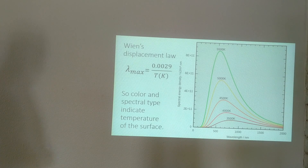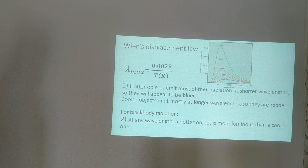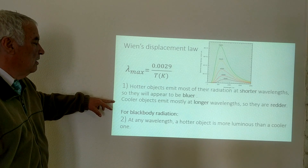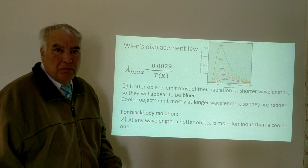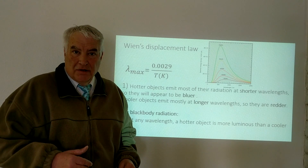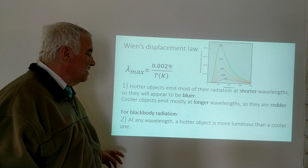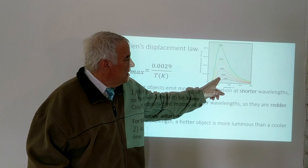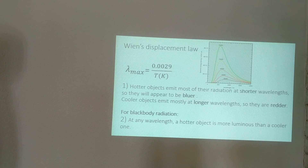Color and spectral type indicate the surface temperature. Hotter objects emit most of their radiation at shorter wavelengths, so they appear bluer. Cooler objects emit mostly at longer wavelengths, so they appear redder. For objects that behave as black bodies — which includes stars — a hotter object is more luminous than a cooler one at any wavelength. So the hotter star is always brighter than the cooler one overall. That is a summary of the spectrum of a star.